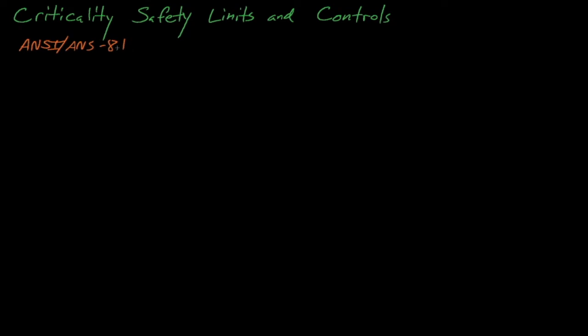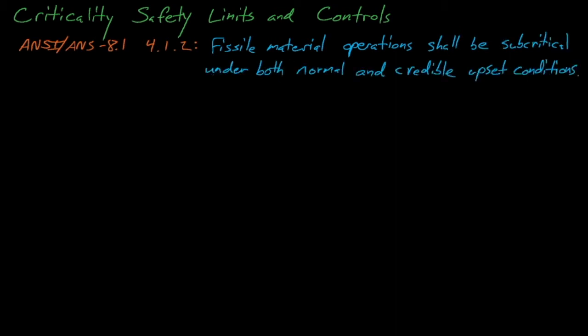The ANSI ANS 8.1 standard states that before a new operation with fissile material can begin, or before an existing operation is changed, it shall be determined that the entire process will be subcritical under both normal and credible upset conditions. Today we're going to discuss how criticality safety engineers can apply control mechanisms to comply with the 8.1 standard. We'll discuss what controls we can establish, how we know they're working, and what features we'd like our controls to have.